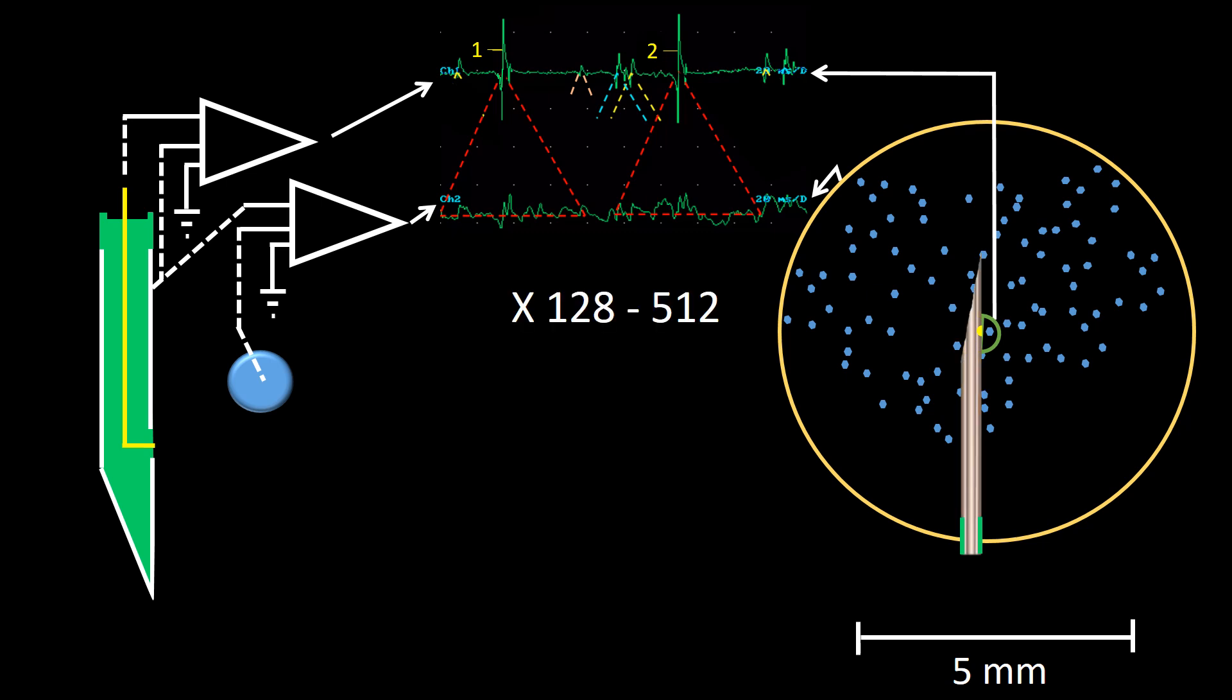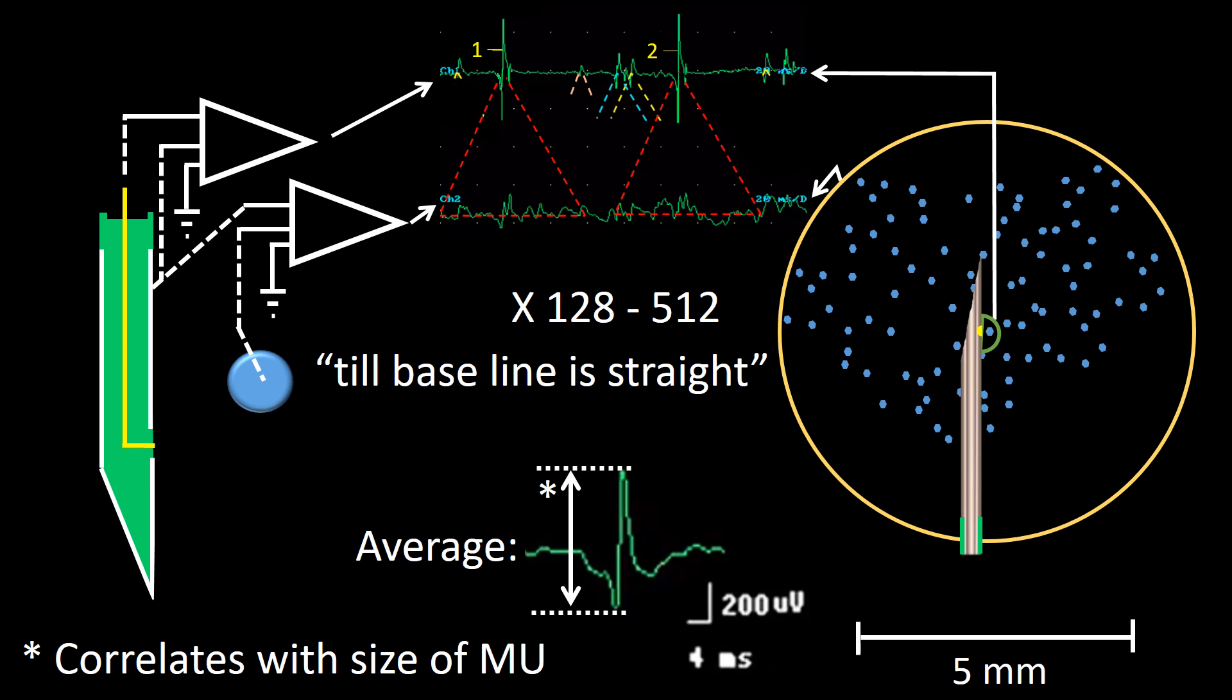So when this is done, that is when the components in channel 2 temporarily related to the prime potential in channel 1 are extracted about 128 to 512 times, or when the baseline of the average potential is straight, we get a macromotor unit potential, whose amplitude corresponds best to the number of muscle fibers belonging to the same motor unit as the muscle fiber producing the prime potential.